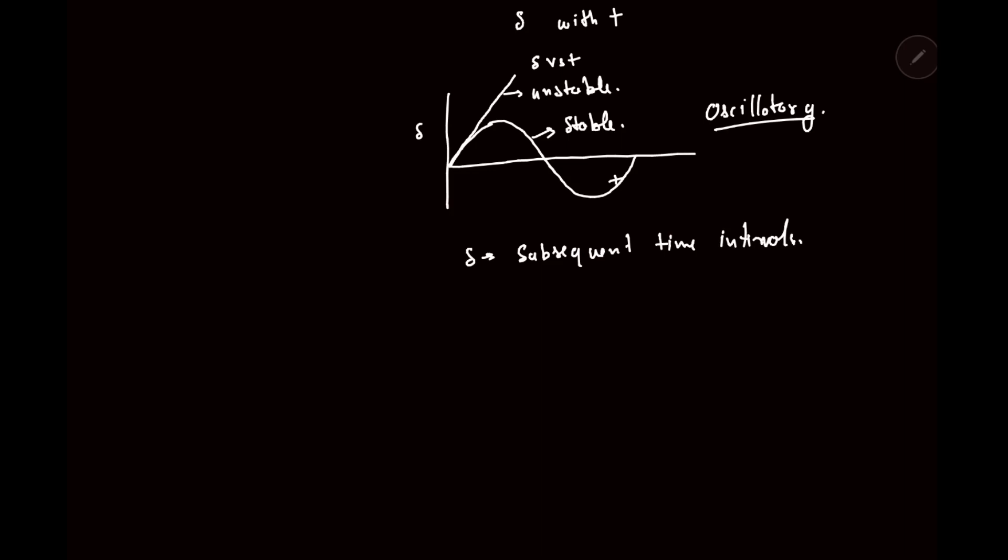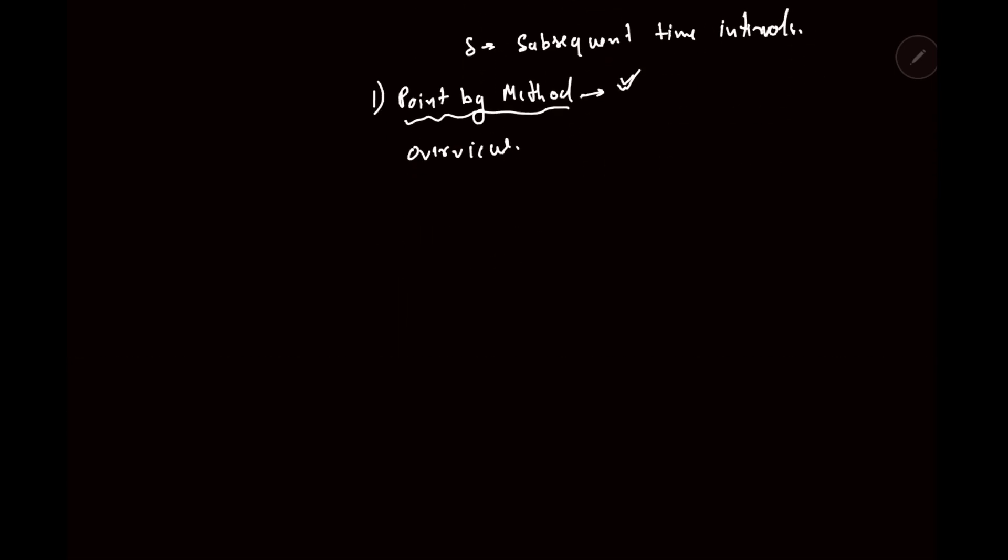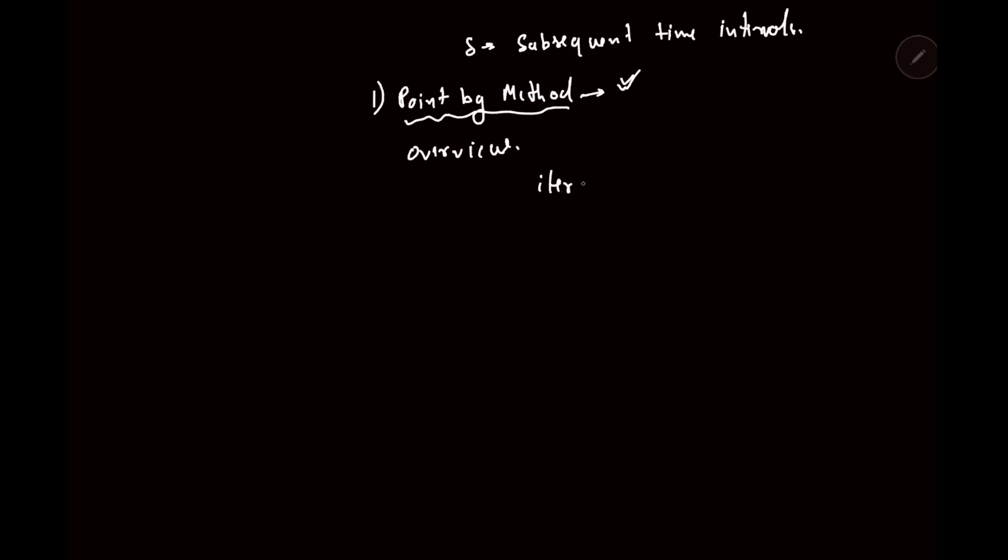So there are different numerical techniques to solve this swing equation, and one of that technique, the basic technique, is point-by-point method. We will be dealing with this technique in the upcoming lectures. Point-by-point method is simply an iteration method.